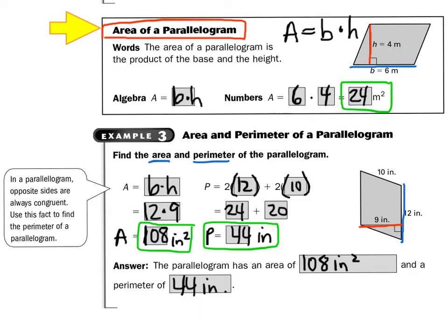Let's find the area of a parallelogram. The area of a parallelogram is just the base times the height. I make the base blue and the height red, and they have to touch each other at a right angle. In algebra, we say area equals base times height. Plugging in the numbers, the area would be 6 times 4, or 24 square meters.